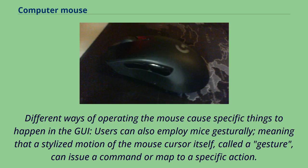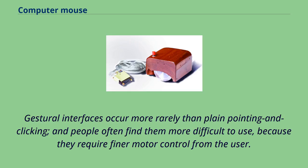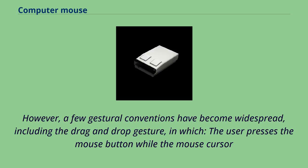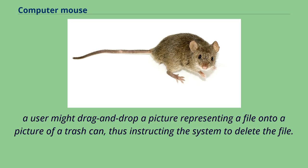Different ways of operating the mouse cause specific things to happen in the GUI. Users can also employ mice gesturally — a stylized motion of the cursor called a gesture can issue a command or map to a specific action. For example, in a drawing program, moving the mouse in a rapid X motion over a shape might delete the shape. Gestural interfaces are rarer and harder to use, but a few conventions have become widespread, including the drag-and-drop gesture, in which the user presses the mouse button, moves the cursor to a different location while holding it, then releases — for example, dragging a file icon onto a trash can to delete it.